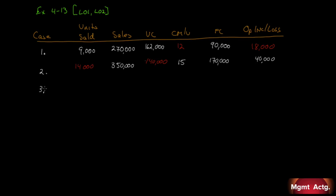Case 3: we sold 20,000 units. We don't know total sales, but variable costs are $280,000 and contribution margin per unit is $6. We don't know fixed costs, but operating income is $35,000. We've got a bit of work to do here.